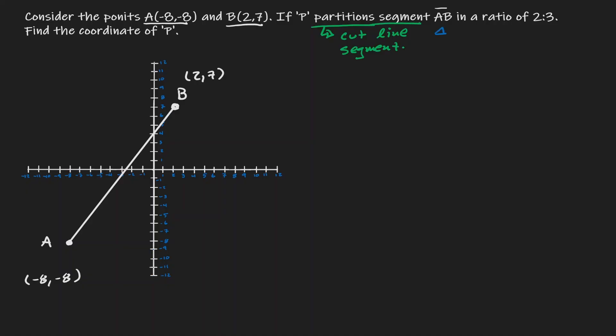But this line segment has a direction. We are going to start at A and move towards B. In other words, we will start at the bottom point and move towards the upper point, starting from A and moving to B.